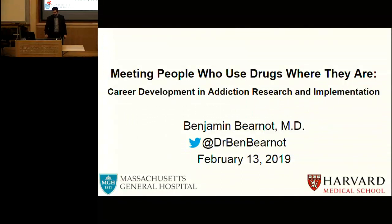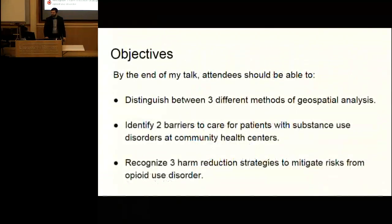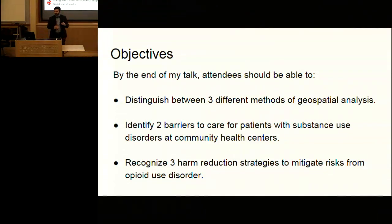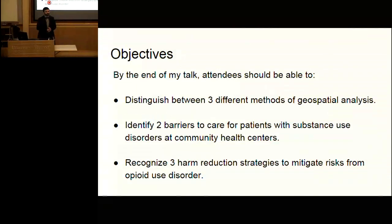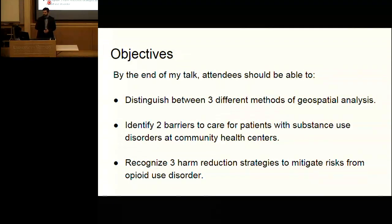Thanks to the Vermont Center on Behavior and Health and UVM for hosting me. The scientific objectives here are to distinguish between three different methods of geospatial analysis, identify barriers to care for individuals with substance use disorder who receive care at community health centers, and recognize harm reduction strategies to mitigate risks from opioid use disorder.